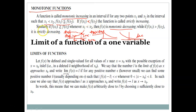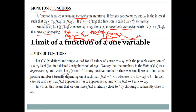For a monotonically decreasing function the case reverses: when x₁ < x₂, then f(x₁) ≥ f(x₂). For a strictly decreasing function, the strict inequality f(x₁) > f(x₂) holds. With this we move on to the limit of a function of one variable.